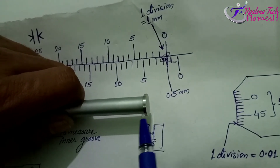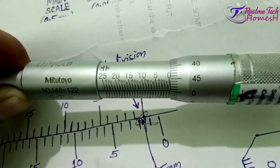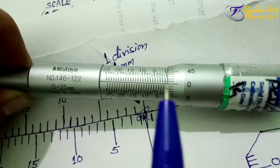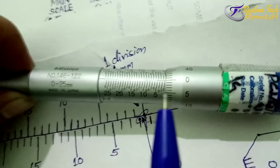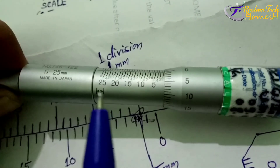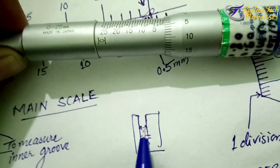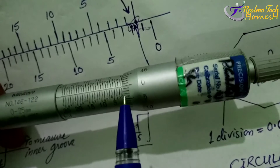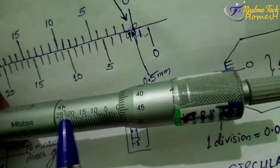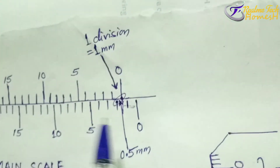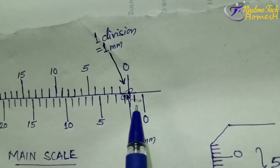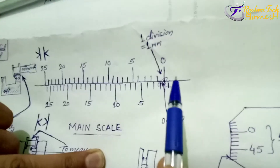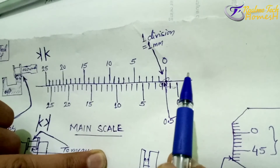The outer groove scale starts at zero, but the internal groove measurement scale starts at 1.5 mm because the micrometer's own thickness is 1.5 mm. That is why the two scales give different values for the same physical reading — the outer groove scale begins at 0 mm and the internal groove scale begins at 1.5 mm.